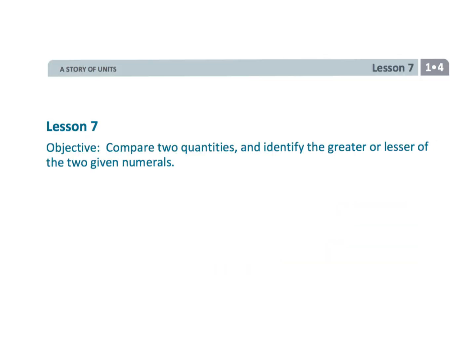And that wraps up first grade module four, lesson seven, comparing quantities. And we are circling the greater number or circling the lesser of the two numbers that are given.